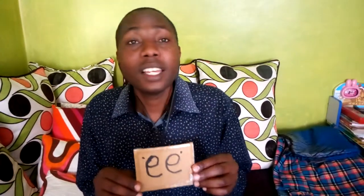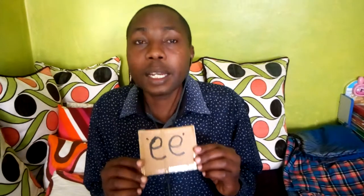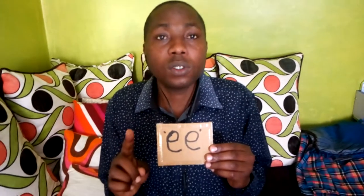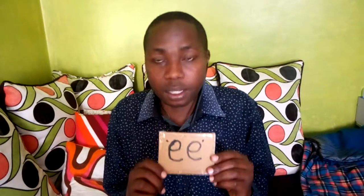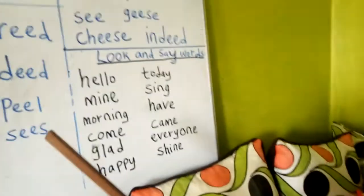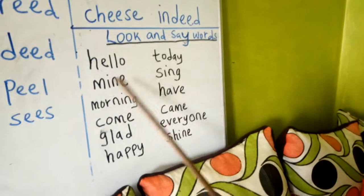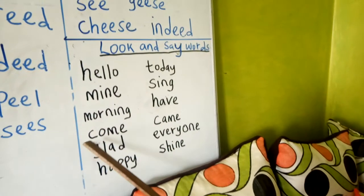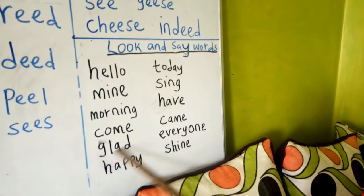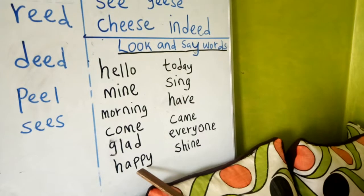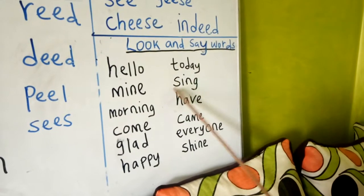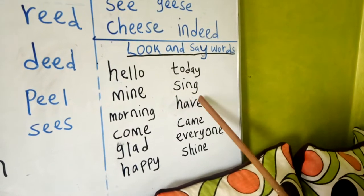So today we were learning about double sound 'ee'. It is a double sound because you put together E and E, but it sounds as 'ee'. Now there are other words that we can look and say — look-and-say words. Words like: hello, mine, morning, come, glad, happy, today, sing, have, came.